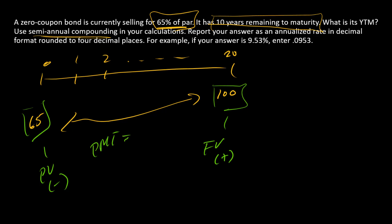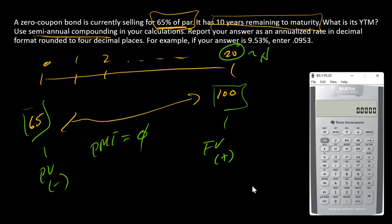PMT, since it's a zero coupon bond, is zero. And N is 20. We are now good to go with our financial calculator. We'll start with 100 as FV, zero as PMT, -65 as PV, 20 as N, and I'm going to compute I. I've got 2.1773%. Remember, that is a semi-annual rate.